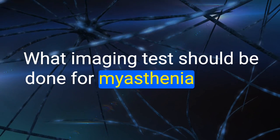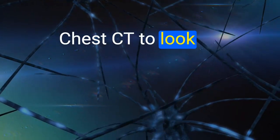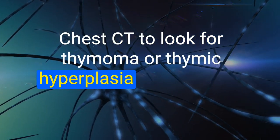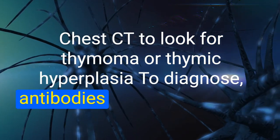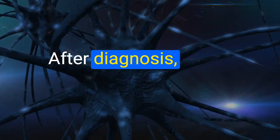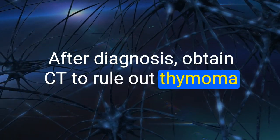35. What imaging tests should be done for myasthenia gravis? Chest CT to look for thymoma or thymic hyperplasia. Antibodies are highly specific; after diagnosis, obtain CT to rule out thymoma.